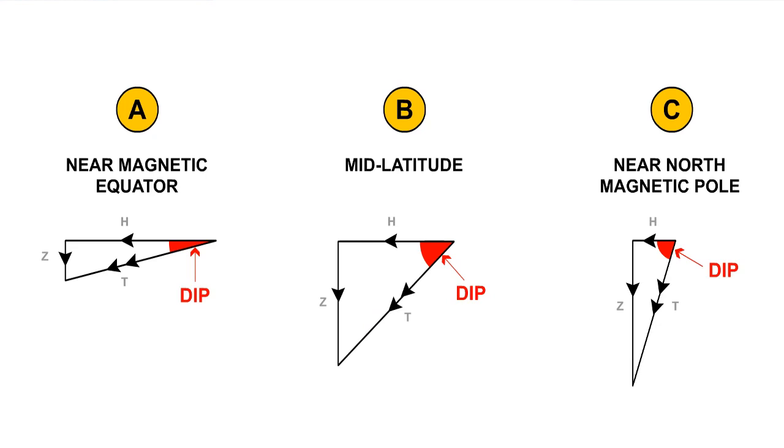As can be seen in the diagram, the angle of dip will vary with increasing magnetic latitude. Example A has a low dip angle, as it is near to the magnetic equator. Example B has more dip at mid-latitudes, although the angle is acceptable. Example C has a large angle of dip, as it is near to the magnetic pole.